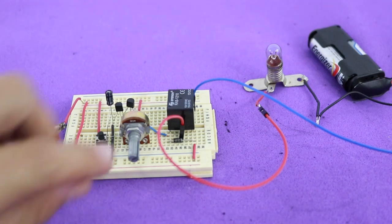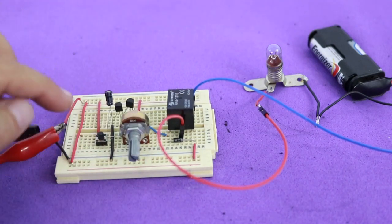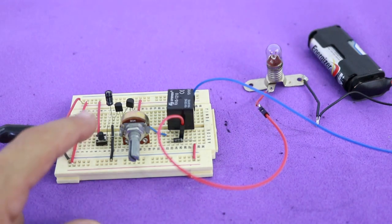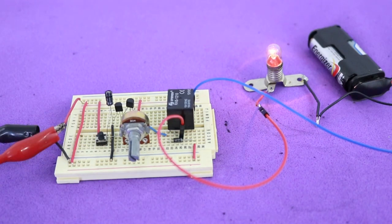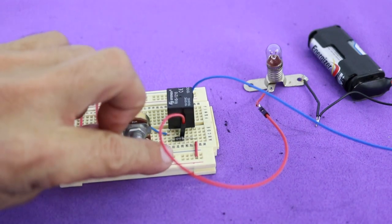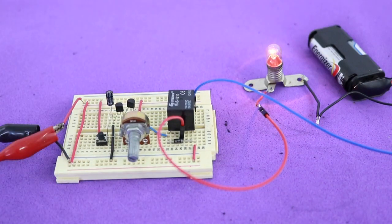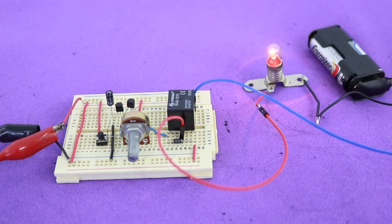We can vary that time with the potentiometer and put the potentiometer to its maximum value. We have an on time of approximately five seconds.